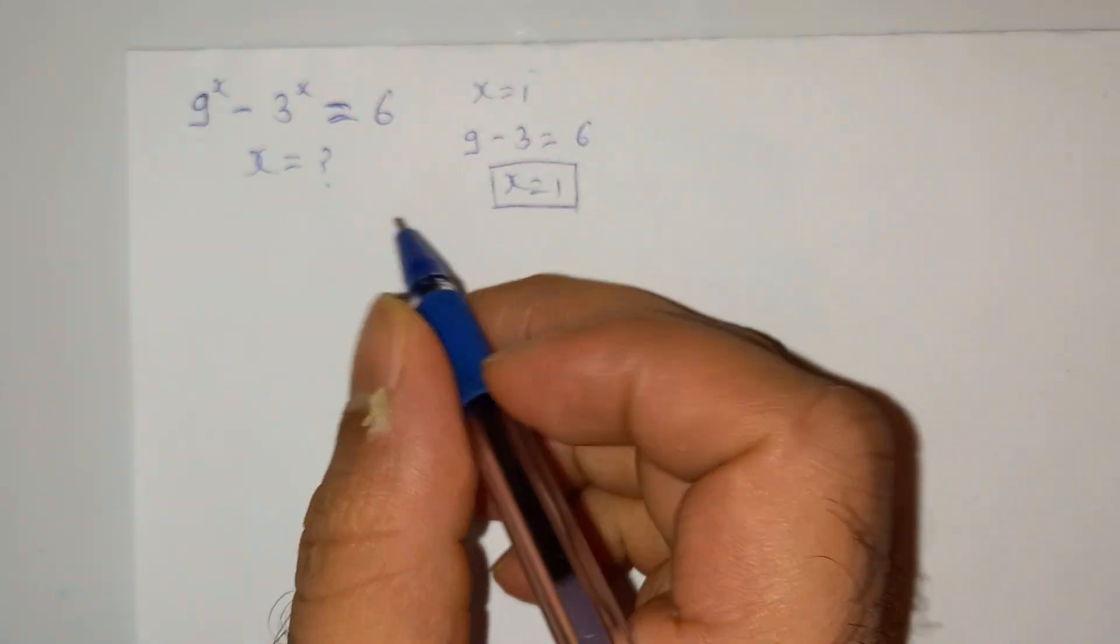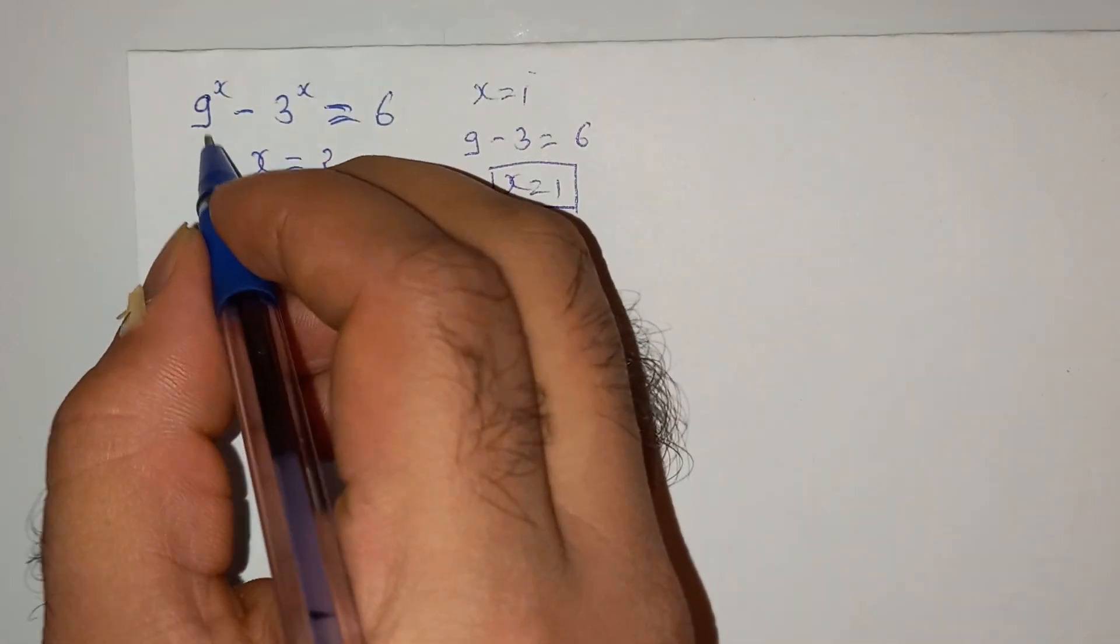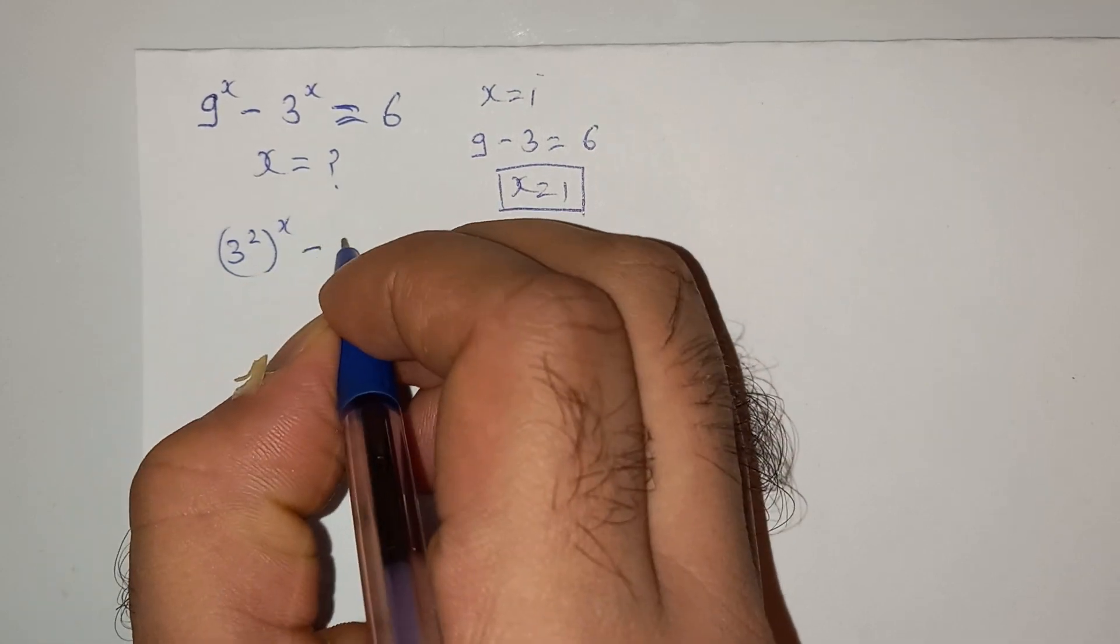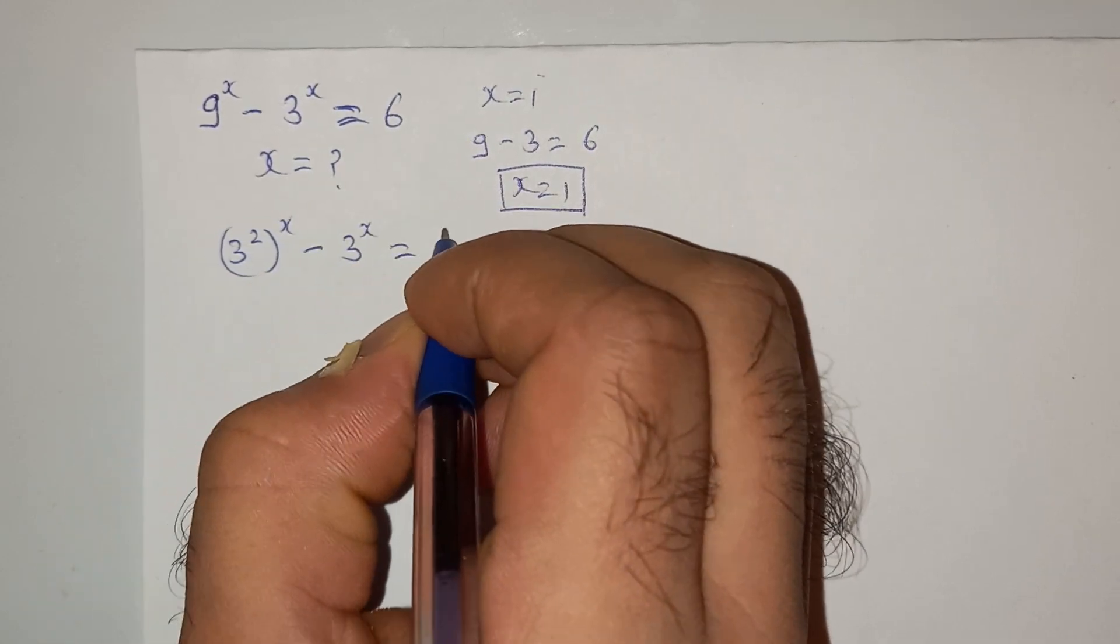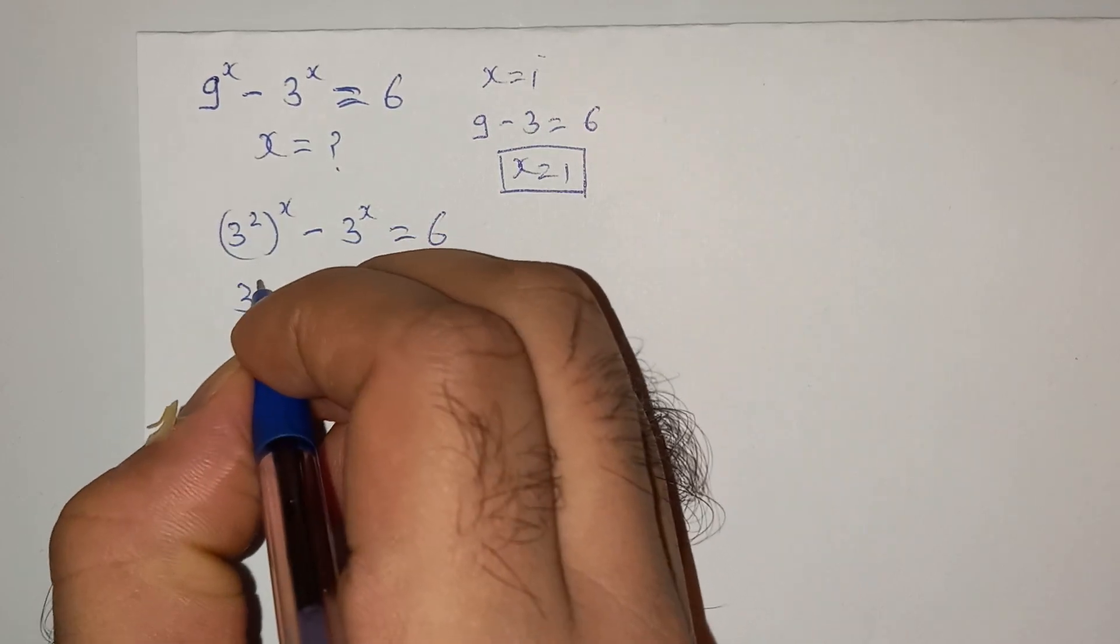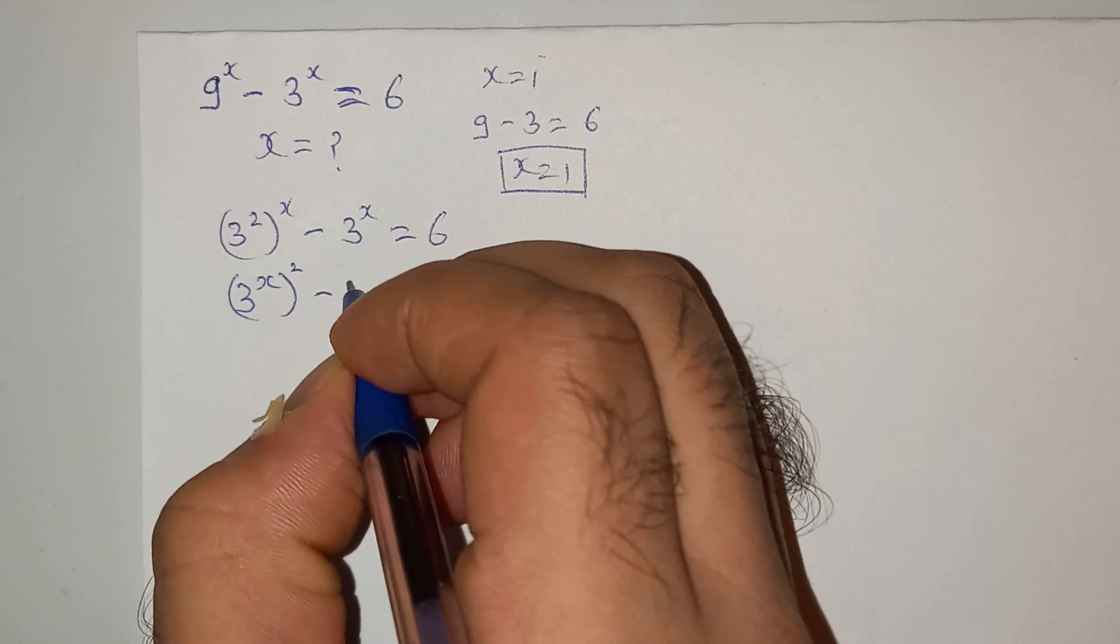So we can write this as 3 square power x minus 3 power x equals to 6. So this can be written as 3 power x square minus 3 power x minus 6 equals to 0.